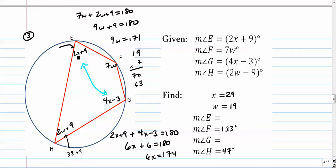So if x is 29, 2 times 29 is 58. 58 plus 9 is 67. Angle E is 67.